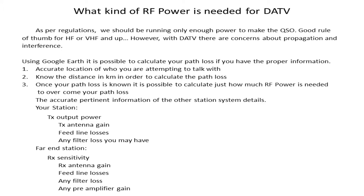What kind of power do you need to run DATV? As regulations say, you should run only enough power to make the contact. However, with DATV there are concerns about propagation and interference. Just because you have line of sight to the hill doesn't mean it's going to see you. When Air Force One flies into town, they turn on a radar system at 1255 MHz that totally trashes the input to the repeater on the hill. You can see little blips in your screen as that radar sweeps around roughly every 1.2 seconds.